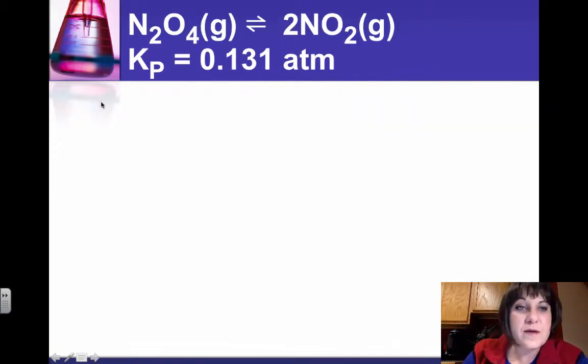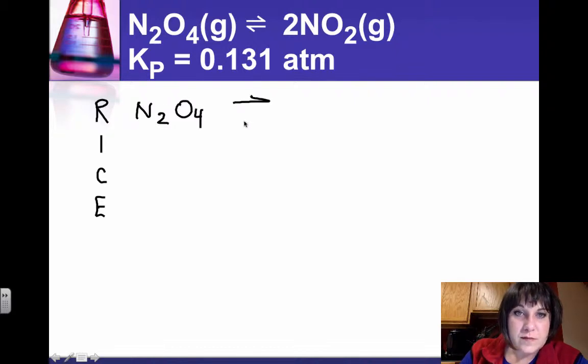OK, our first step is to set up the RICE table. So we need our reaction, our initial conditions, and then we'll evaluate the change. So the reaction is N2O4 becomes two moles of NO2.